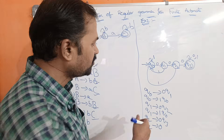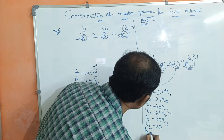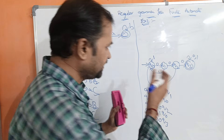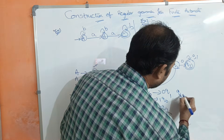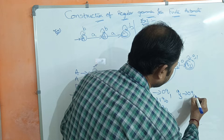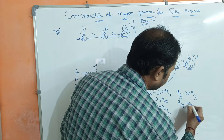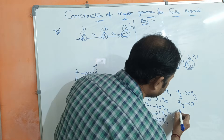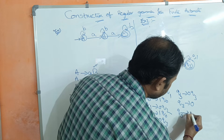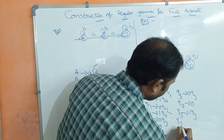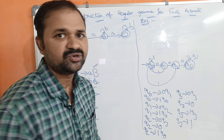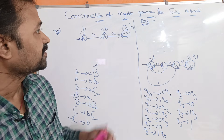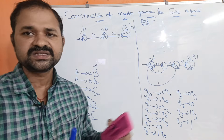Next, q3 on 0 goes to q3 — q3 is the final state — so we write q3 implies 0q3 and also q3 implies 0. Then q3 on 1 goes to q3 — q3 is the final state — so we write q3 implies 1q3 and q3 implies 1. This is how we construct regular grammar from the finite automaton.